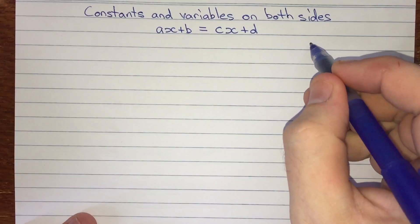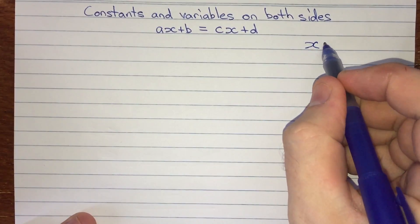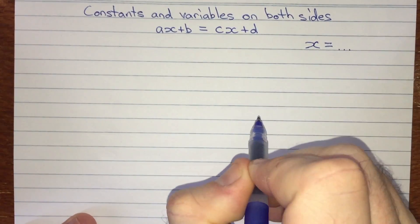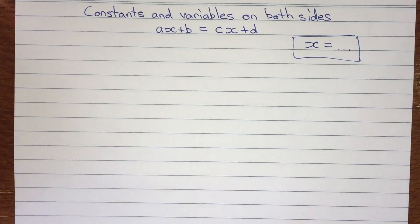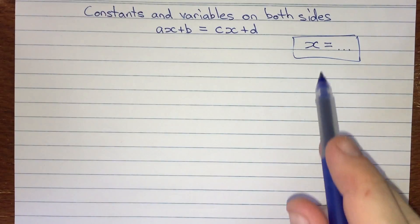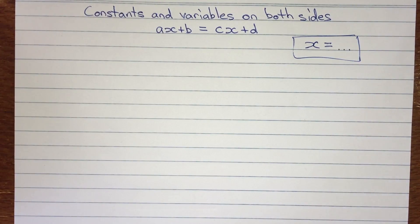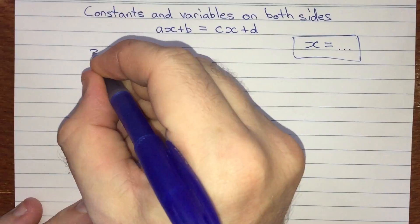Now remember, just like in all the other cases, we're trying to get x equals something, where something would be some number or constant. So we're going to try to rearrange this equation using mathematical operations and end up with x equals something. Let's look at something specific.